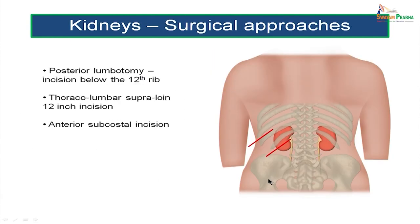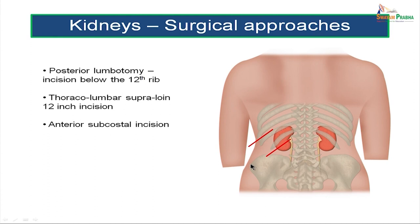There are two common approaches to the kidney. The first is a posterior lumbotomy — an incision below the 12th rib extending downwards and outwards — which is the most commonly used incision. Occasionally a thoracolumbar supraloin incision extending from the thorax onto the anterior abdominal wall is done, carefully reflecting the parietal layer of the pleural recess. Very rarely an anterior subcostal incision is also used, but by far the commonest approach is the posterior lumbotomy, with an incision below the 12th rib extending in the renal angle.